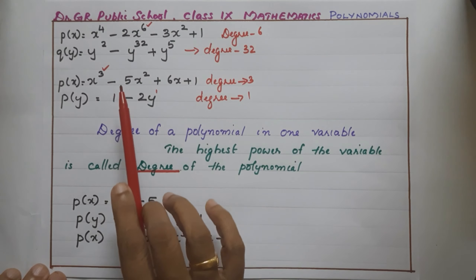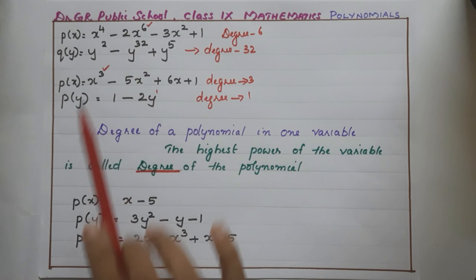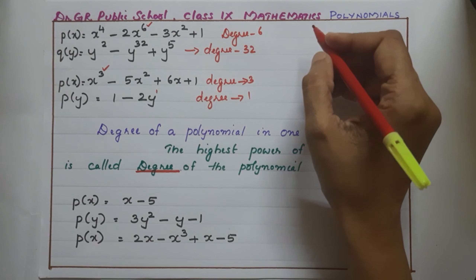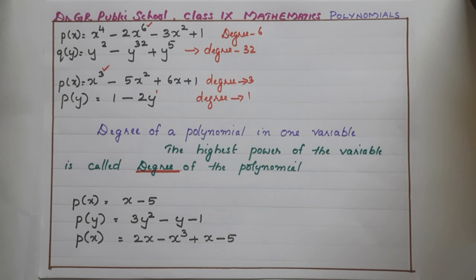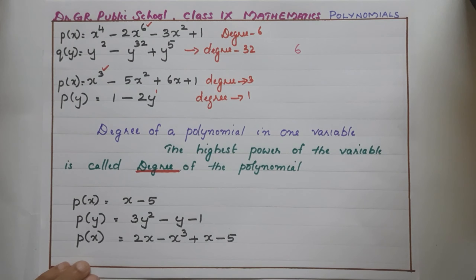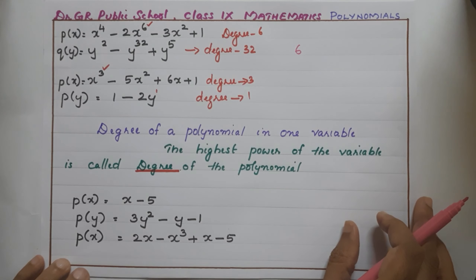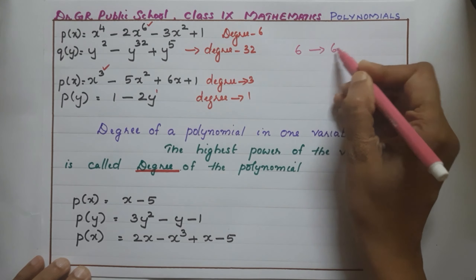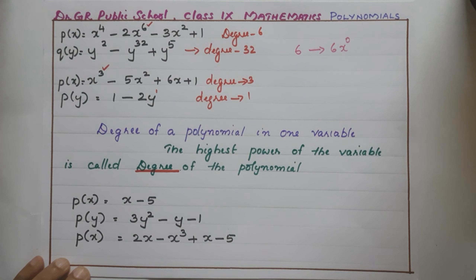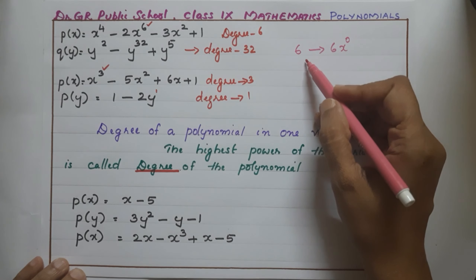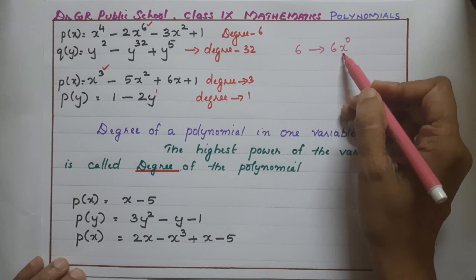It applies only for polynomials in one variable — the highest power of the variable is called the degree of the polynomial. Now consider one constant polynomial. 6 is a constant polynomial. How do we find the degree? We have already discussed that 6 can be written as 6x⁰. So the degree is 0. For a constant polynomial, the degree is 0.